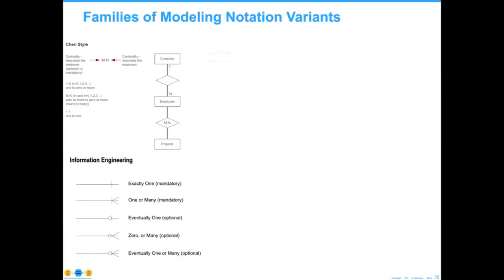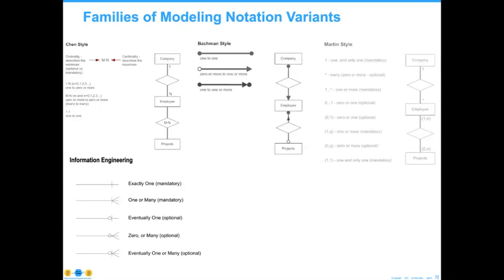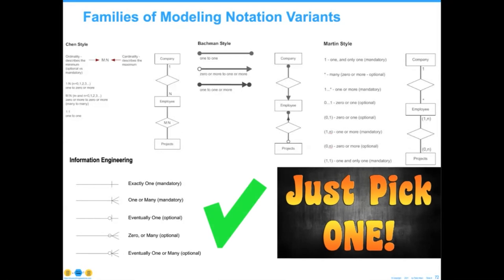Each of these depends on various families of notions. We started out with Chen, Buckman, Martin, and information engineering. If you get data people together, they'll want to talk to you about this — don't let them. Just pick one. And the one that everybody has picked is the information engineering one. The tool will do various representations of these, so if it's important for your organization, go ahead. But most of the other three notations are fading away. It's not that they weren't good — it's just that this seems to be the way everything is working.